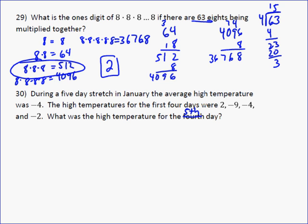So on the fifth day, it would be, well, you know that for 5 days, the average was negative 4. So the sum of the temperatures has to be negative 20. If you know the average and you know the total days, you multiply those two together, and that gives you the sum. The sum of the first 4 days just comes from adding these together. 2 plus negative 9 plus negative 4 plus negative 2.